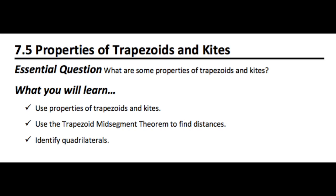All right, so 7.5 properties of trapezoids and kites. Essential question: what are some properties of trapezoids and kites? What you're expected to learn at the end of this will be how to use properties of trapezoids and kites, how to use a trapezoid mid-segment theorem to find distances, and be able to identify quadrilaterals on the coordinate plane.